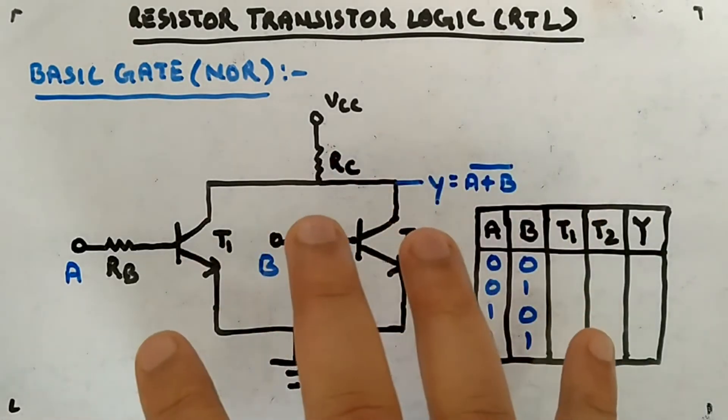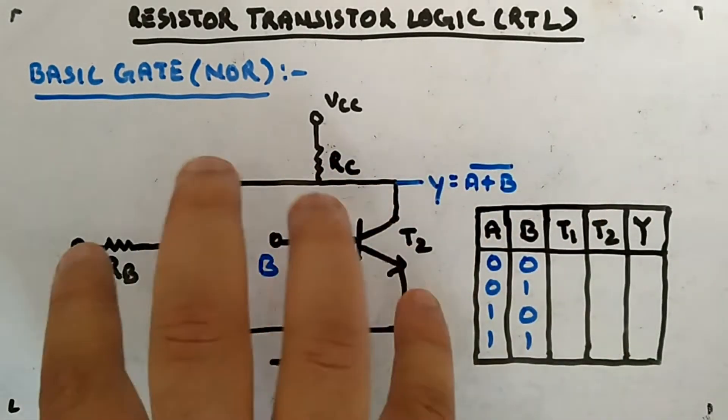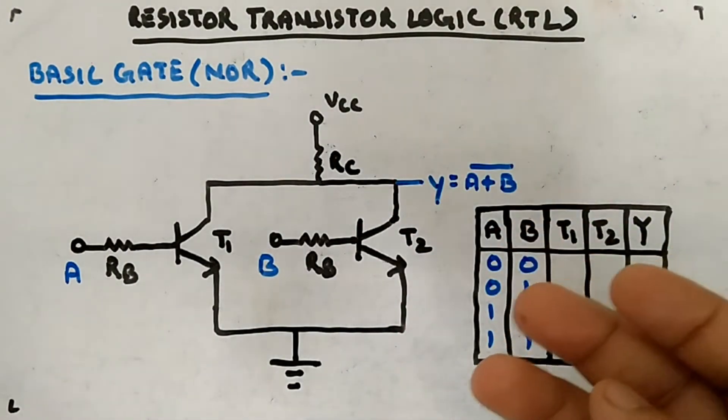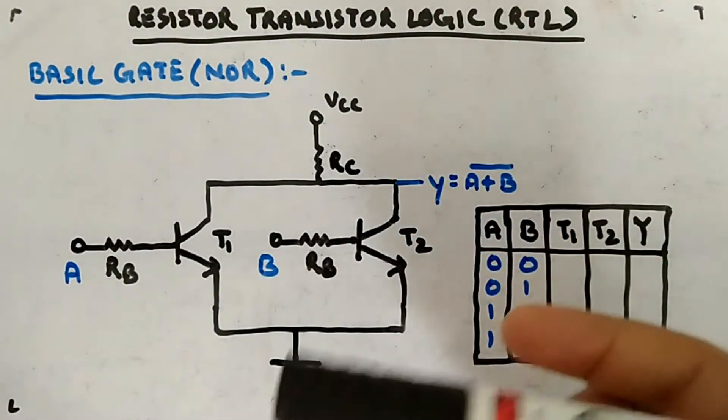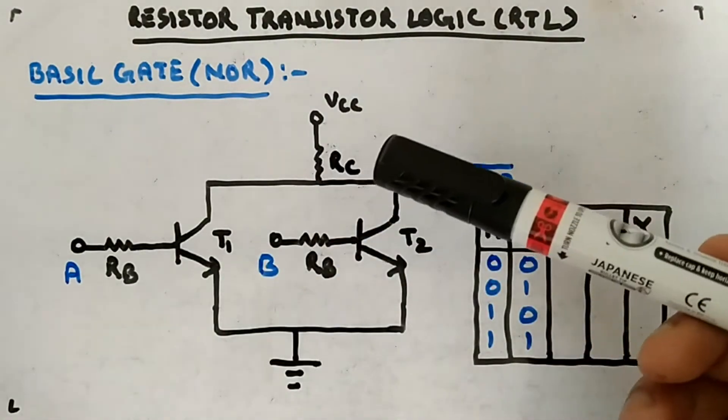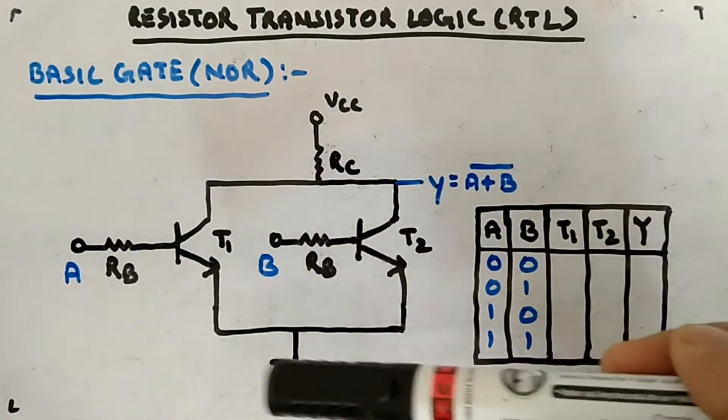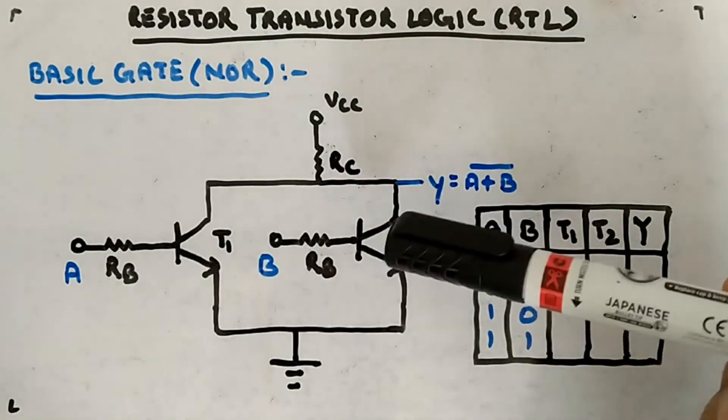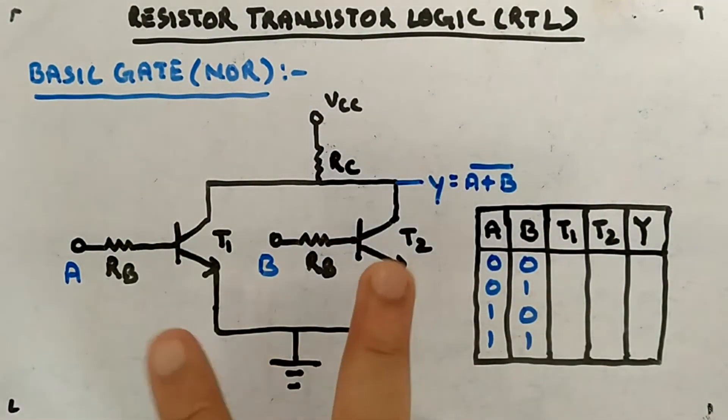Inside an IC you can imagine this kind of circuit, and it will be replicated depending upon the kind of gate you want. NOR gate is the basic gate in RTL. Now let's see how it looks.